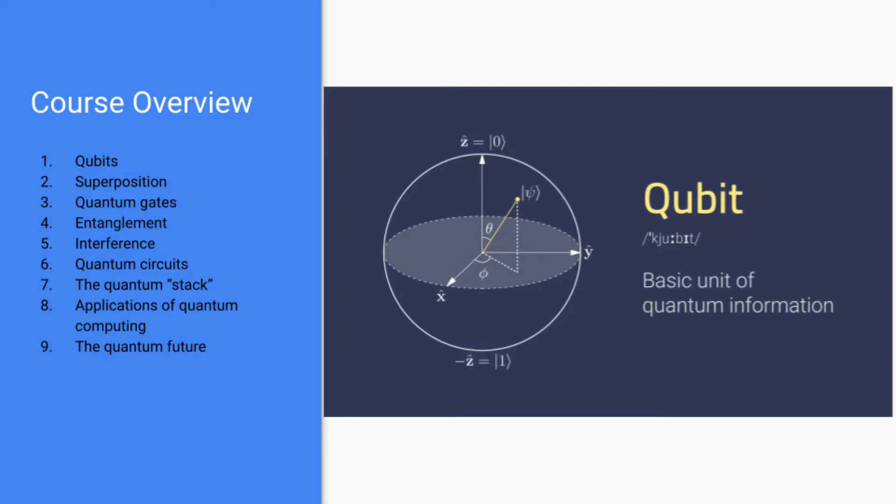In this course, aside from this first lecture about what quantum computing is, we'll also be covering qubits, which is the basic unit of information for quantum computers, superposition, one of the three quantum mechanical phenomena that quantum computers take advantage of, quantum gates, which quantum computers use to execute algorithms, entanglement and interference, which are the other two quantum mechanical phenomena that help quantum computers gain an advantage over classical computers.